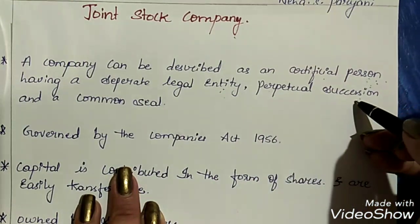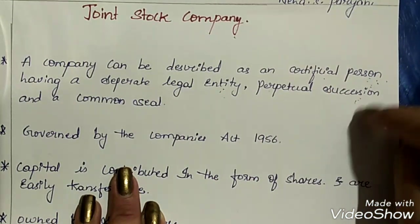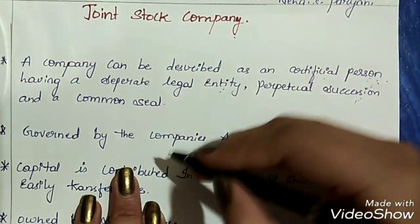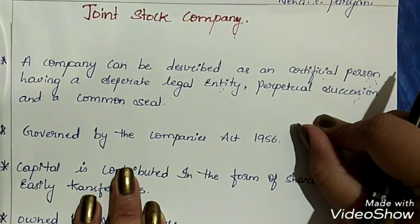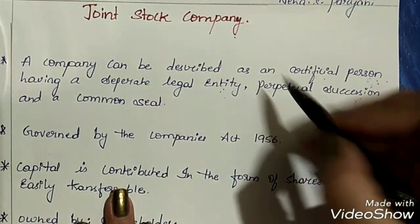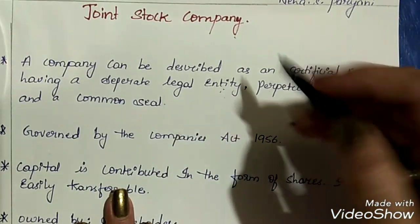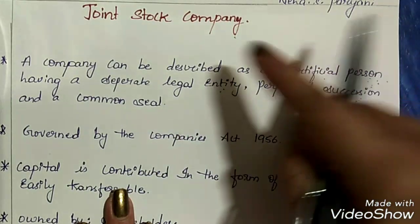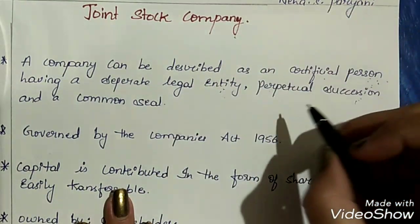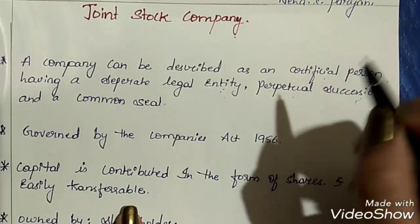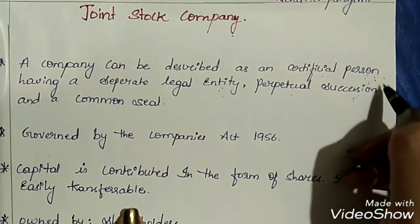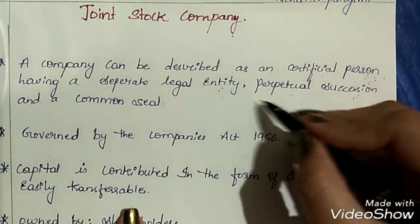The third aspect is perpetual succession. This term means that a joint stock company is a creation of law and it can only be liquidated by the act of law. Death, insanity, or lunacy of its owners will not affect the continuity of the business. Because it is a creation of law, it has to be liquidated by the act of law, hence it has perpetual succession.